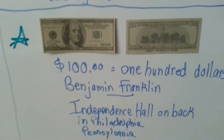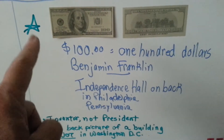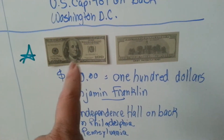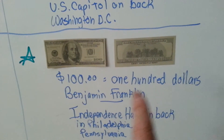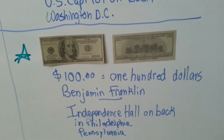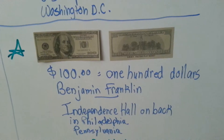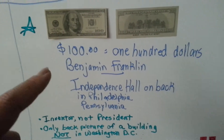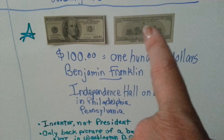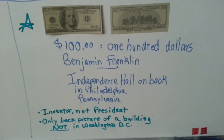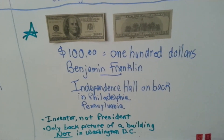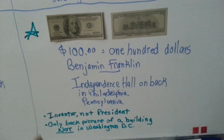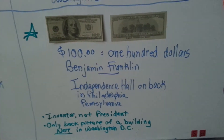Then we've got the hundred dollar bill, and the reason I put a green star here is because the hundred dollar bill has Benjamin Franklin on it, and a picture of Independence Hall in Philadelphia, Pennsylvania on the back. All of the bills have pictures of presidents and buildings located in Washington D.C., except this bill has an inventor on it and a building in Pennsylvania.